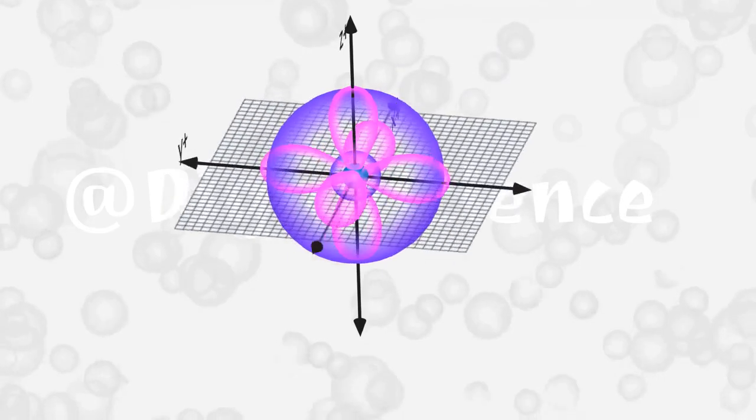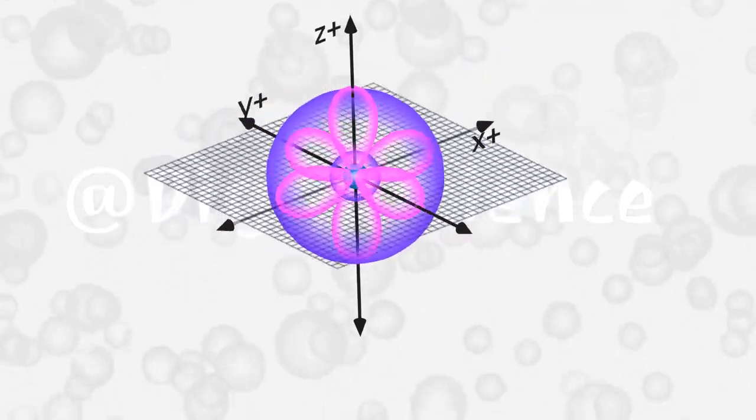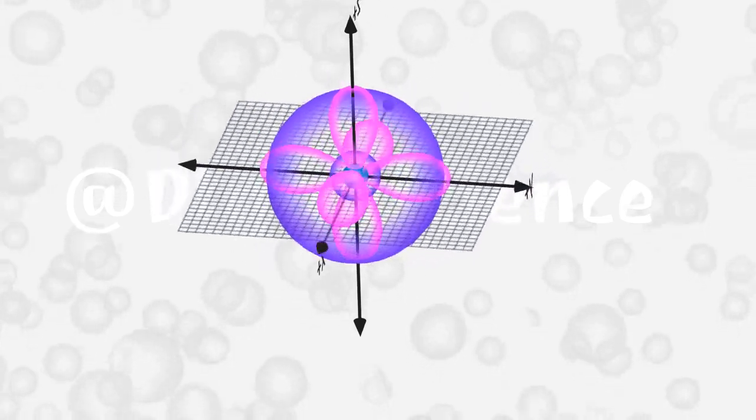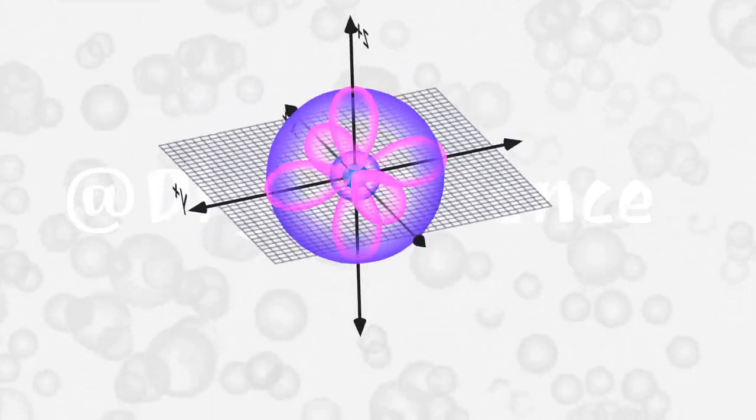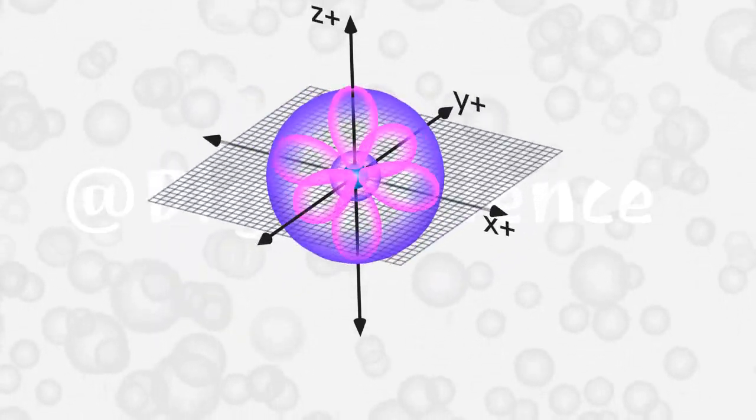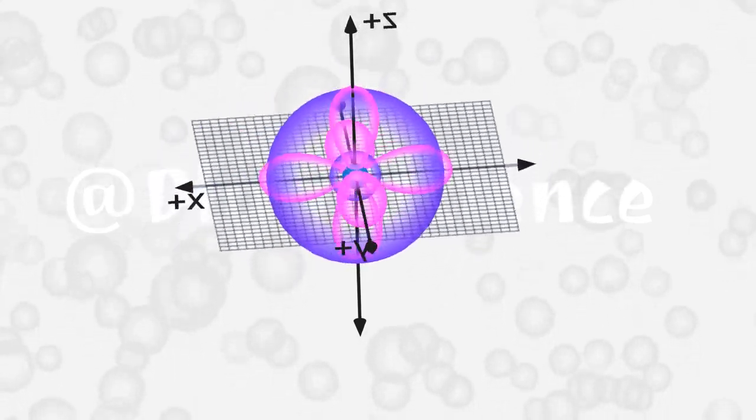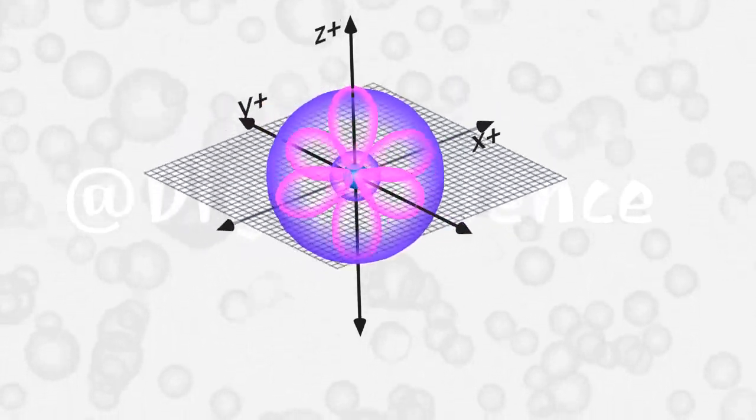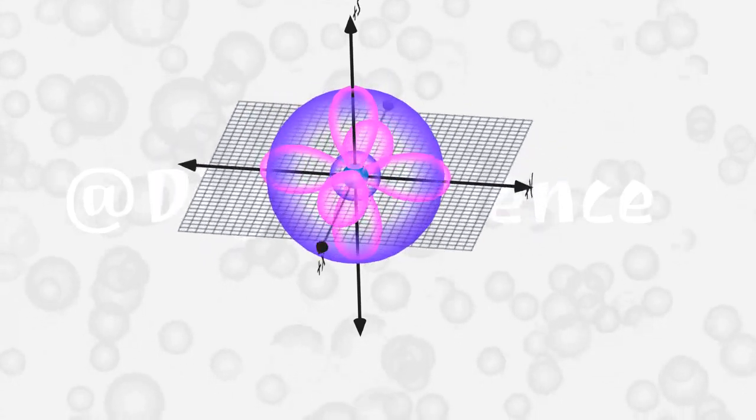We will be familiar with the shape of the orbital after watching the video about the quantum atomic model. Simply put, the orbital shows the probability of finding an electron at that point. We can put electrons anywhere in that orbital.